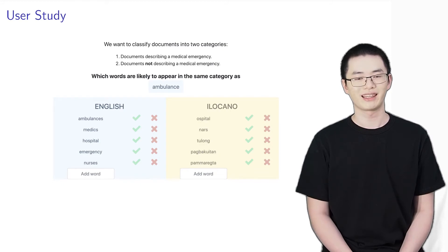We hire 10 English-Ilocano bilingual speakers on Upwork, a freelancing platform. Each user is given a maximum of one hour to provide feedback on 50 keywords. The interface shows five nearest neighbors for each keyword.